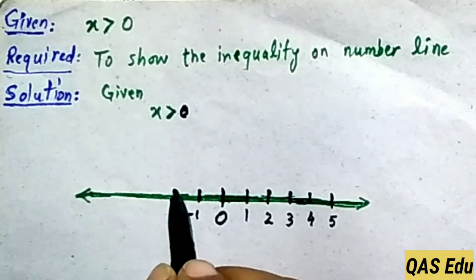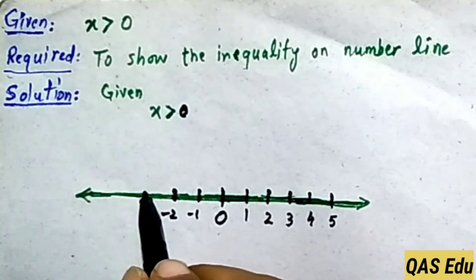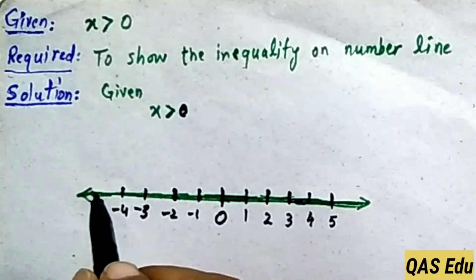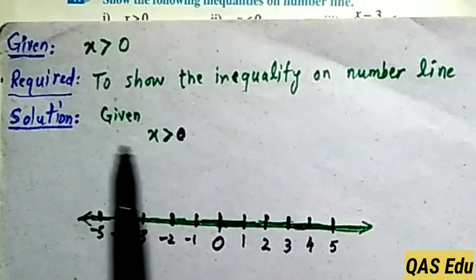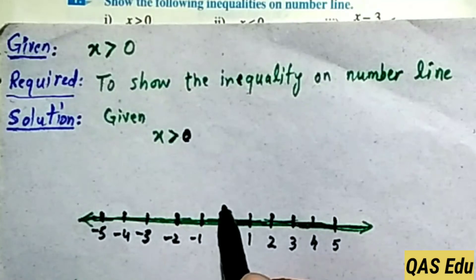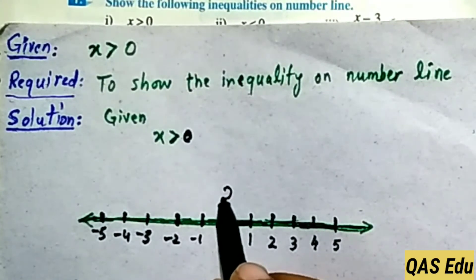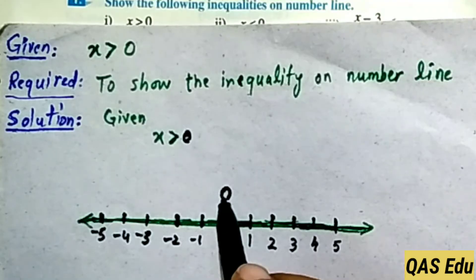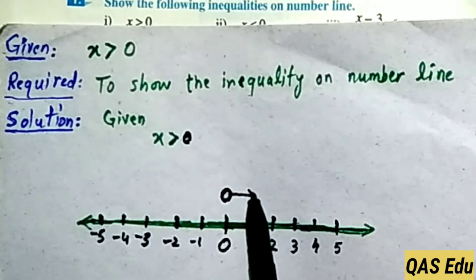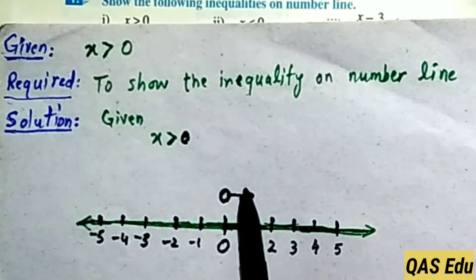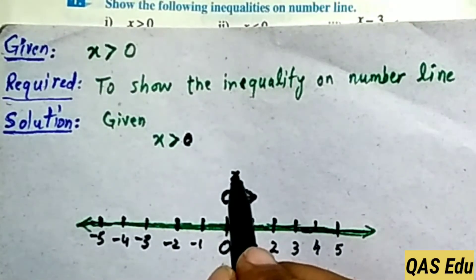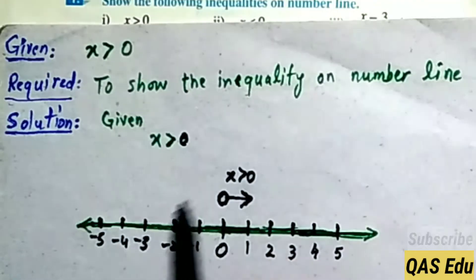On the left hand side, place negative numbers: minus 1, minus 2, minus 3, minus 4, and minus 5 at equal intervals. Since x is greater than 0, and 0 is not included, draw an empty circle at 0. Then draw an arrow pointing to the right to show all values greater than 0.